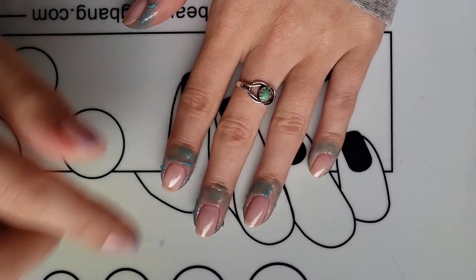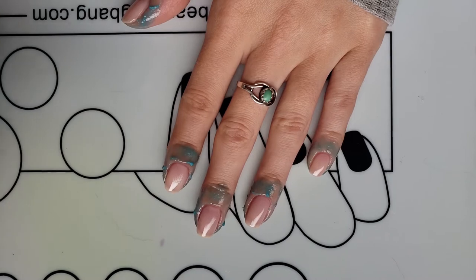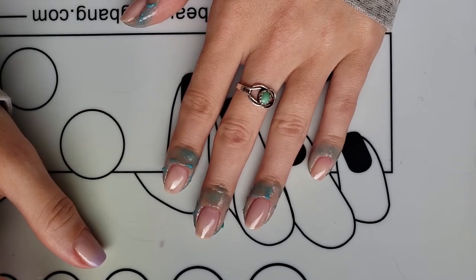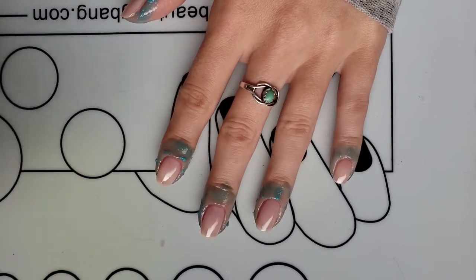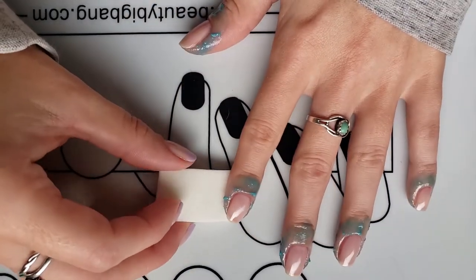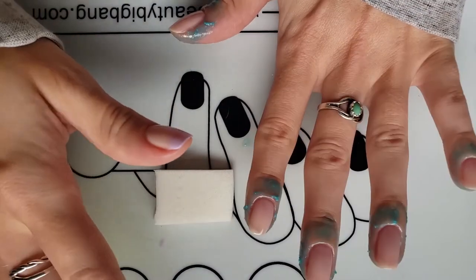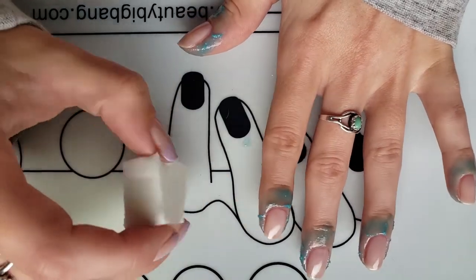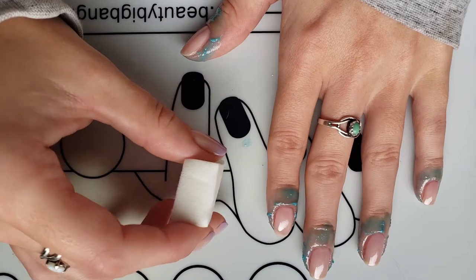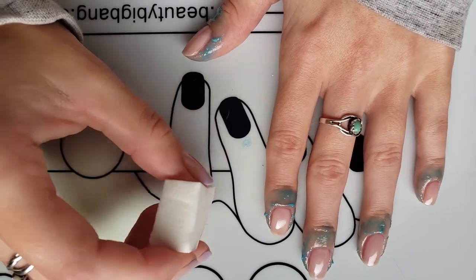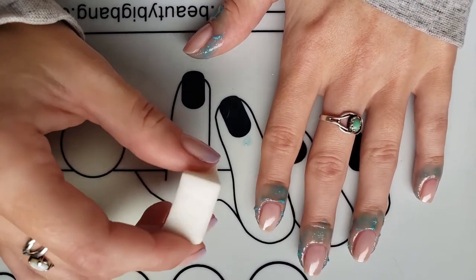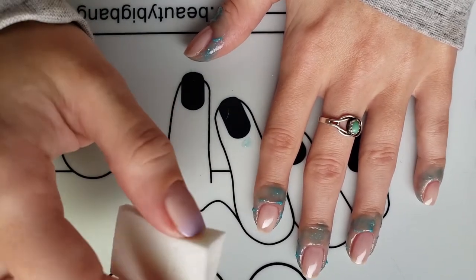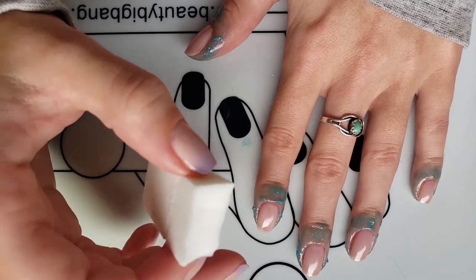Okay, so once your base is pretty dry, then you can go in and do your gradient. The thing I've learned about gradients, other than like a good dry base, is that you want to load up the sponge and make sure that it's pretty saturated because if it's super patchy and dry, when you put it down onto your manicure, it'll just pick up everything.